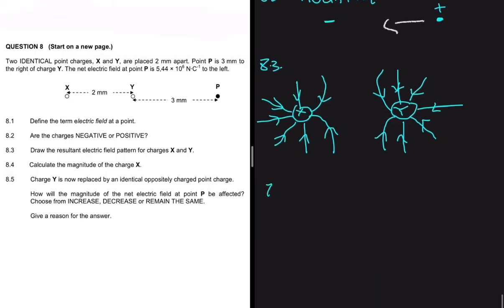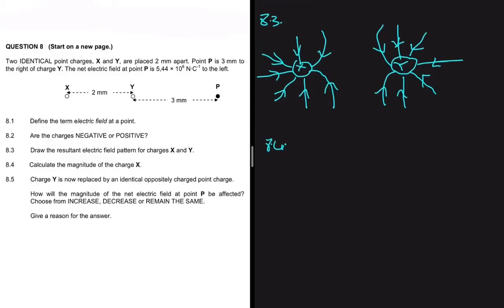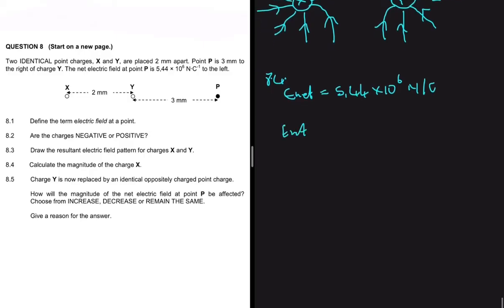For question 8.4, we need to calculate the magnitude of charge X. We are given the net electric field at point P: E_net = 5.44 × 10⁶ N/C. We use E_net = E₁ + E₂, where E₁ is the electric field due to X and E₂ is the electric field due to Y. Recall that E = kQ/r².